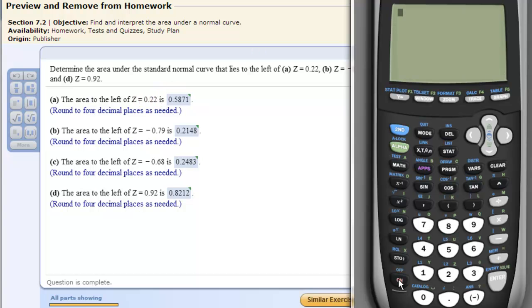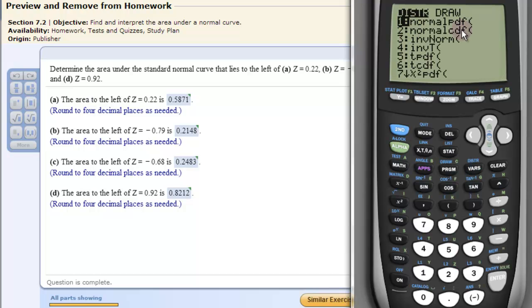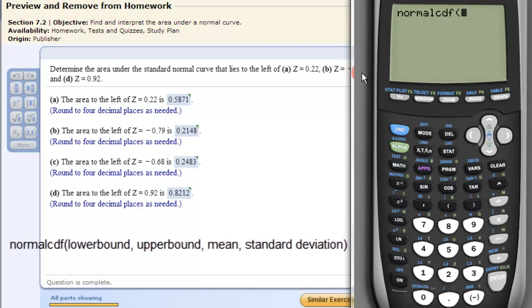Get the calculator, turn it on. It's going to be second and then VARs to get the distributions, and it's going to be the normalCDF function. Enter. Now the normalCDF function has four inputs: the left bound, the right bound, the mean, and the standard deviation.